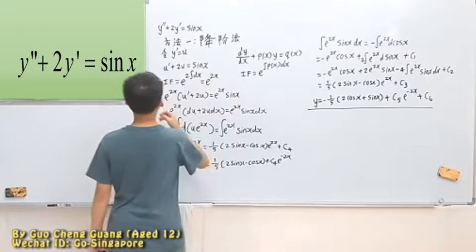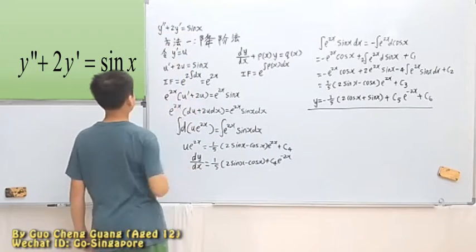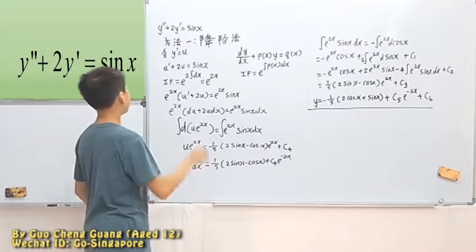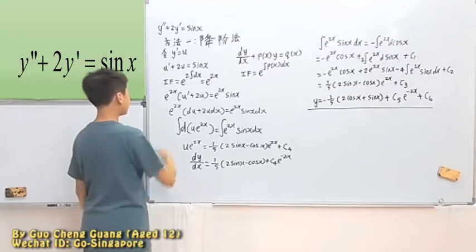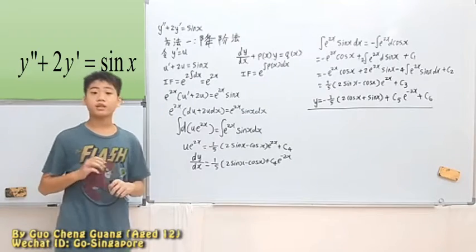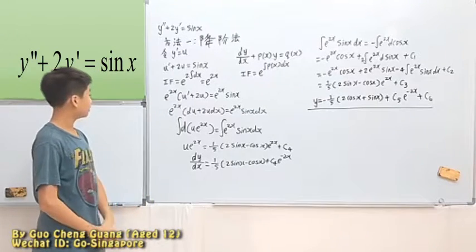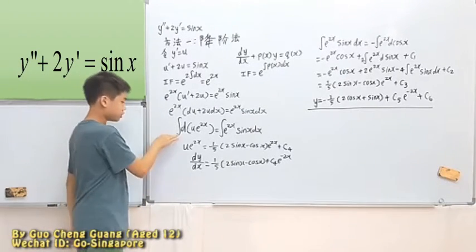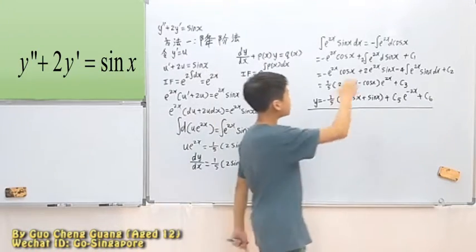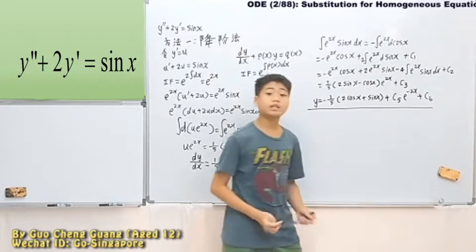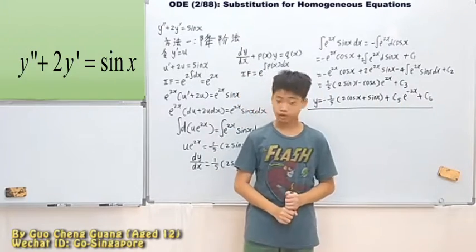So at first, this is the first order and second order. Then after that, we made it just first order. Then we use IF, the Integrating Factor, then total differentiation.